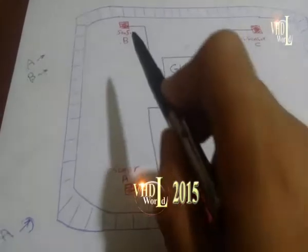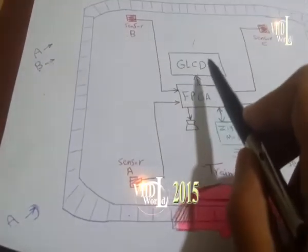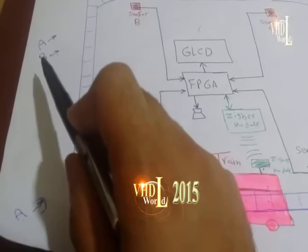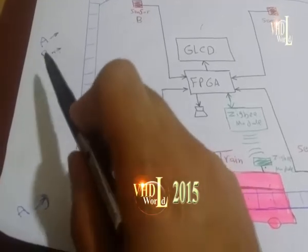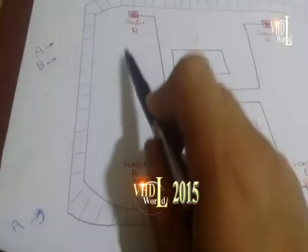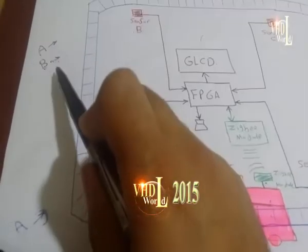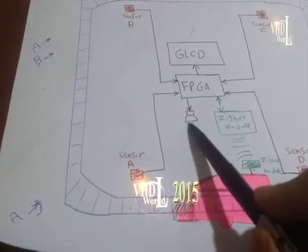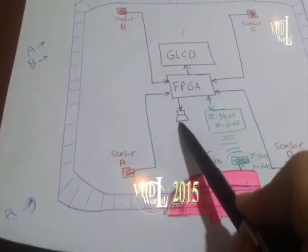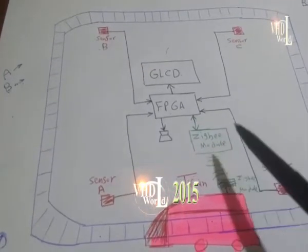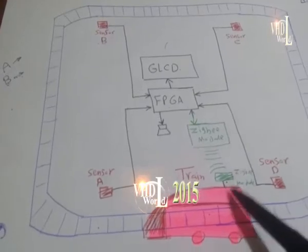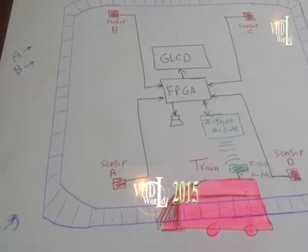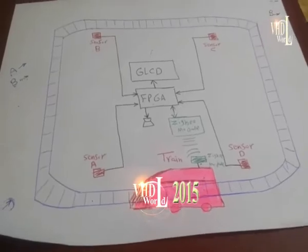When the train reaches Sensor B, we expect that the location will be updated to something like this — B and an arrow. B means that the train has reached Sensor B and it's on its way to Sensor C. We also added a buzzer and two ZigBee modules in order to make a future improvement design to the project.